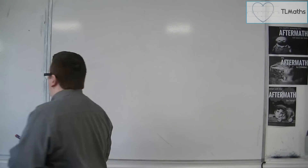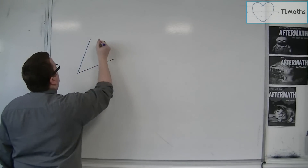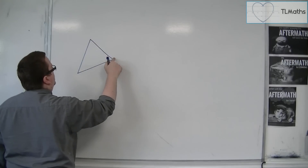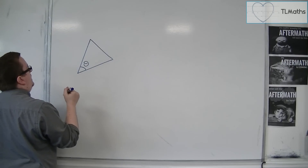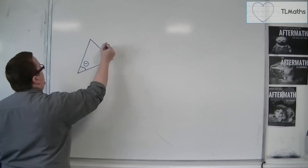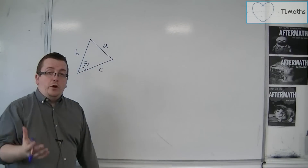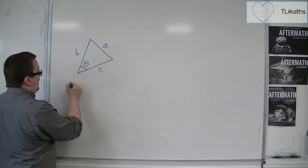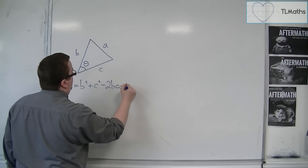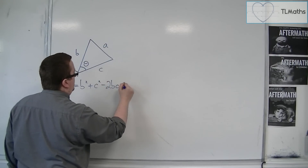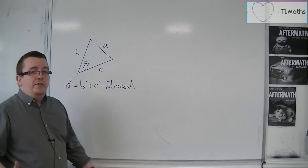What we've generally worked with for the cosine rule is a triangle, where you've got this angle, and then you've got these sides: a, b, and c. The cosine rule says that a squared is equal to b squared plus c squared minus 2bc cos A.